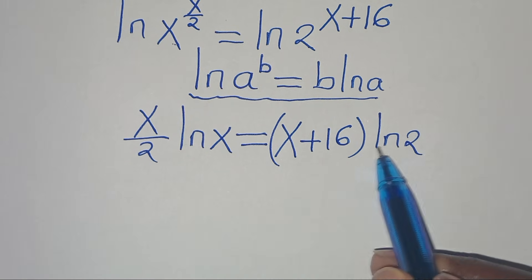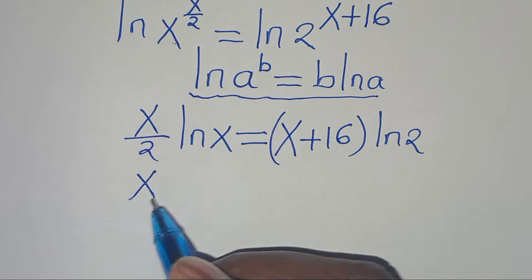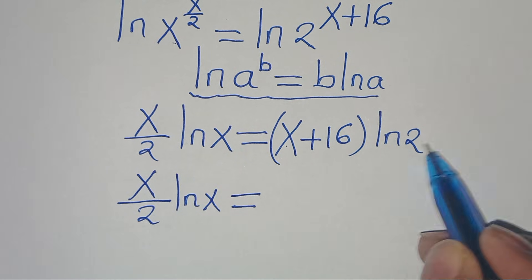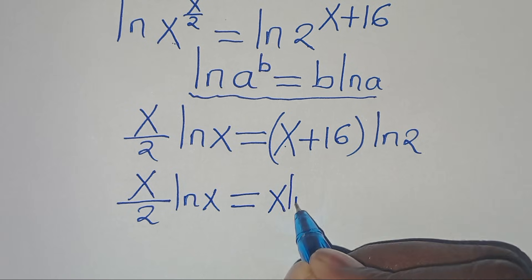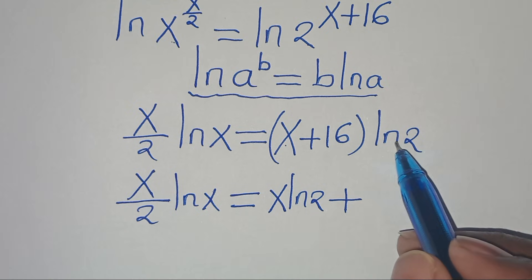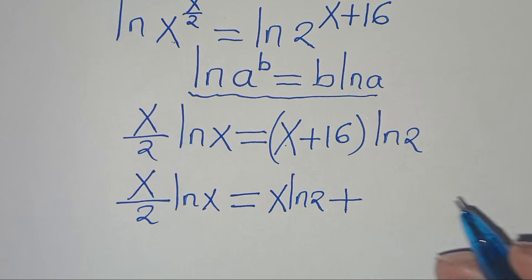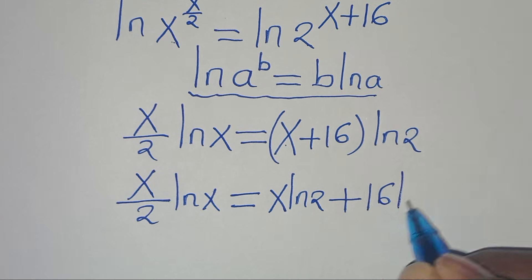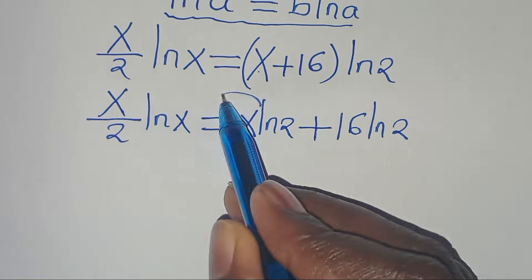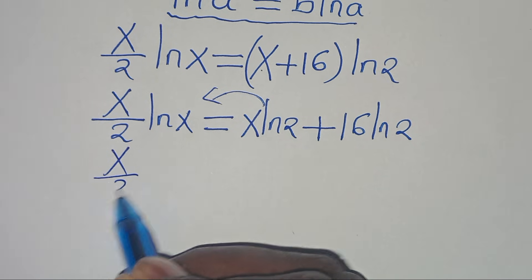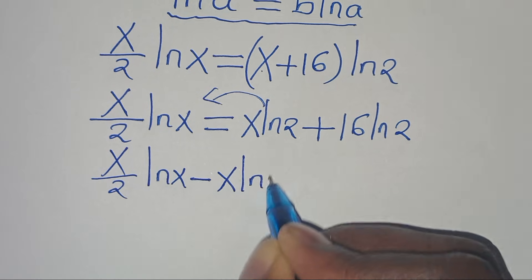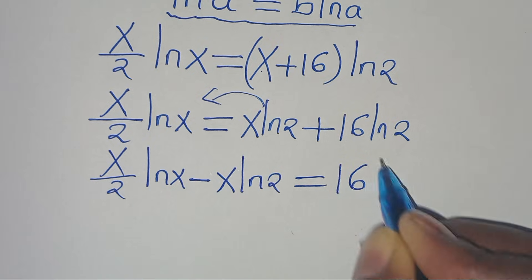The next step is to open the parenthesis, so that on the left hand side we have x over 2 times ln of x, this is equal to x times ln of 2, plus 16 times ln of 2, which is 16 ln of 2. Now let's take x ln of 2 to the left hand side, so that we have x over 2 times ln of x minus x ln of 2, this is equal to 16 ln of 2.